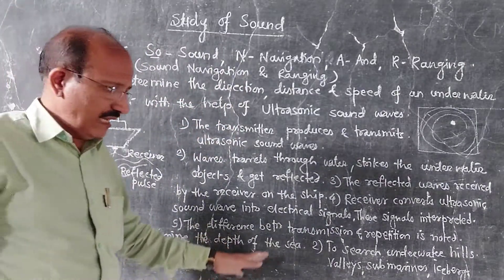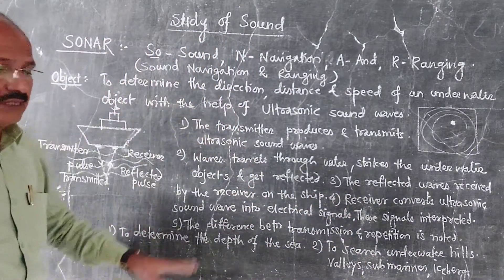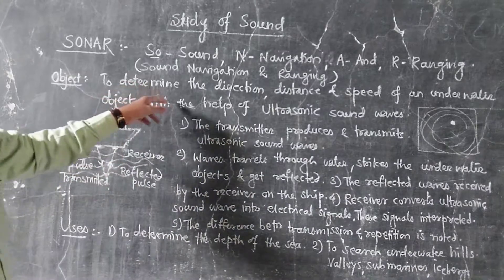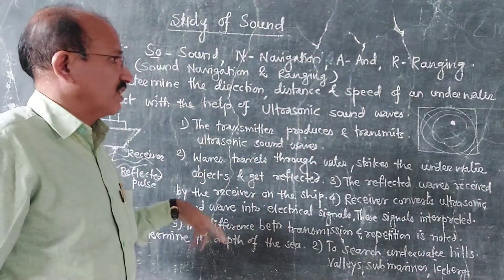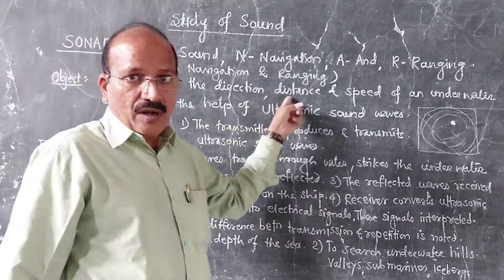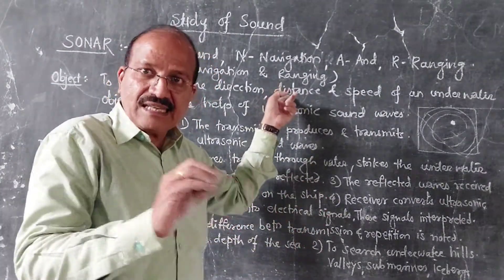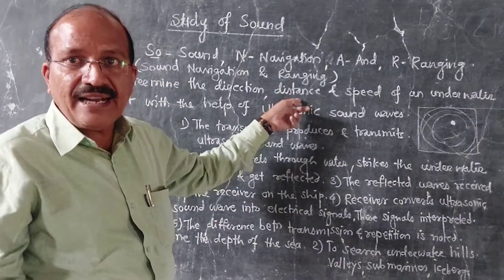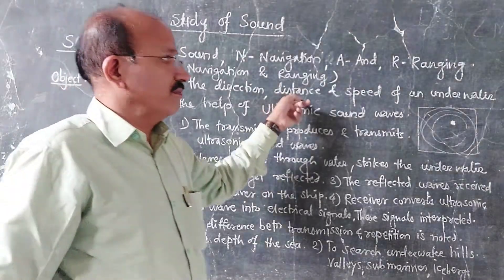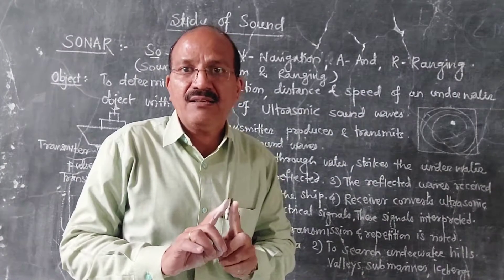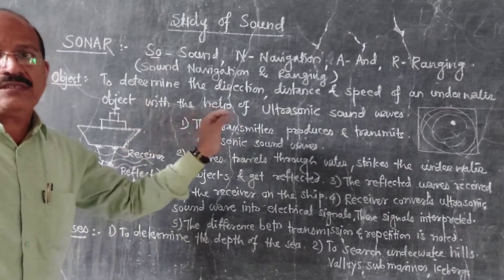Sonar can determine the depth of the sea as well as underwater hills, valleys, submarines, and icebergs. From this, the sailor can change the direction of the ship. He identifies how far an iceberg, valley, or hill is with the help of ultrasonic sound, which turns into an electrical signal, and he changes the speed of the ship. In this way, sonar works on the ship.